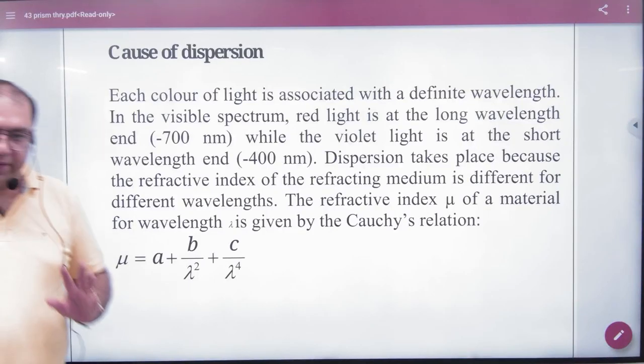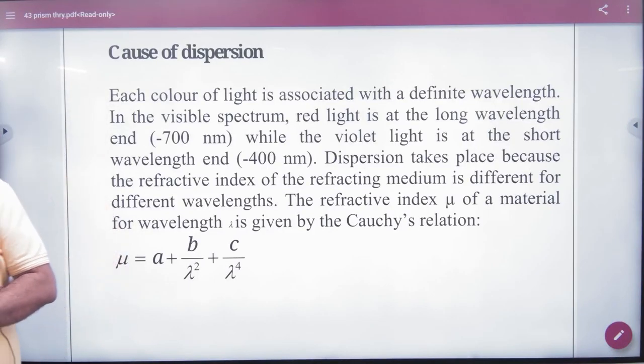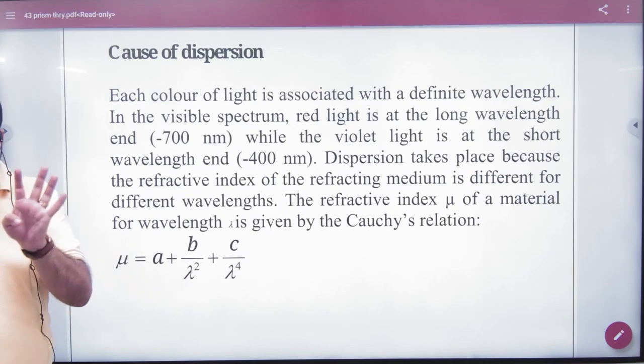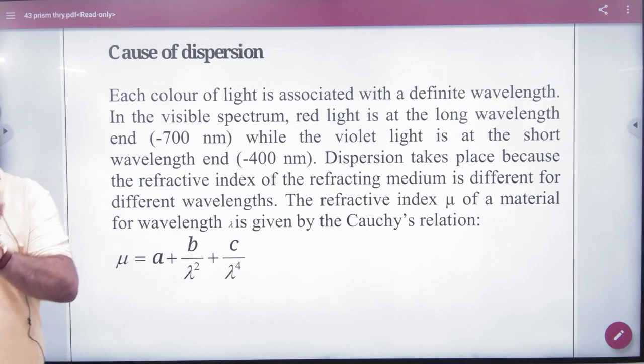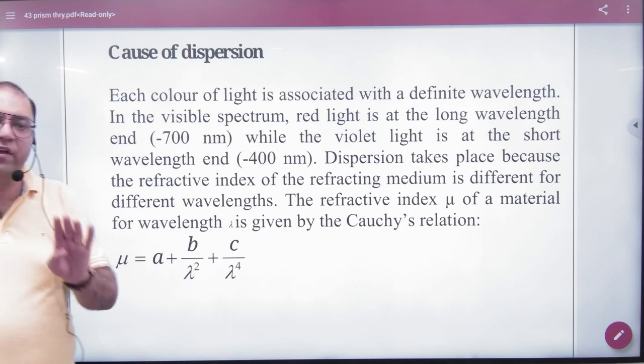In the cause of dispersion, this tells you why the dispersion has happened. So when you consider seven colors, white light is made of seven colors, the wavelength of seven colors is not the same.